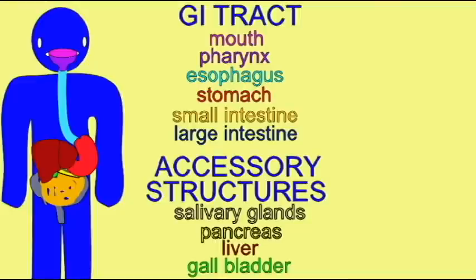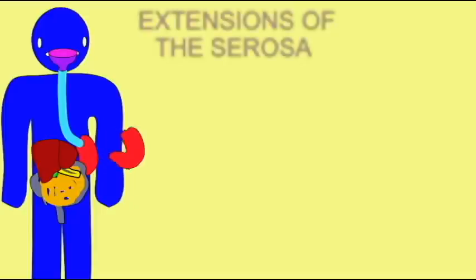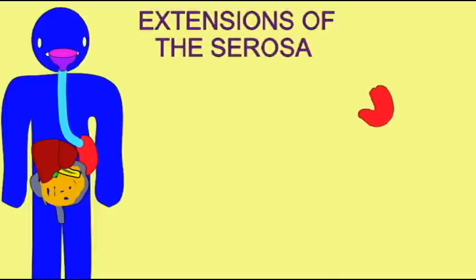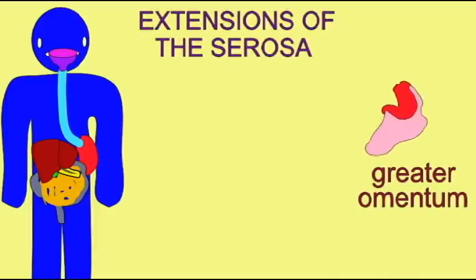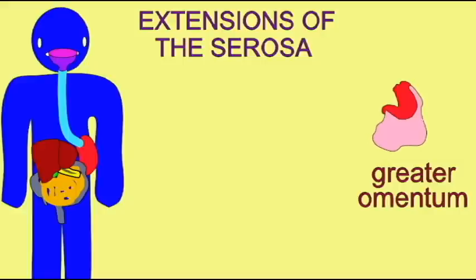There are also a series of extensions of the serosa layer. The greater omentum lies over the coils of the large and small intestines, and is sometimes known as the fatty apron because of the large amounts of adipose it contains. The greater omentum arises from the greater curvature of the stomach.